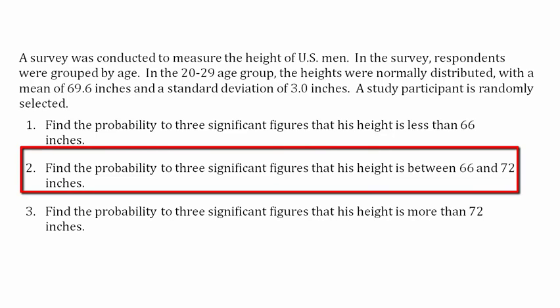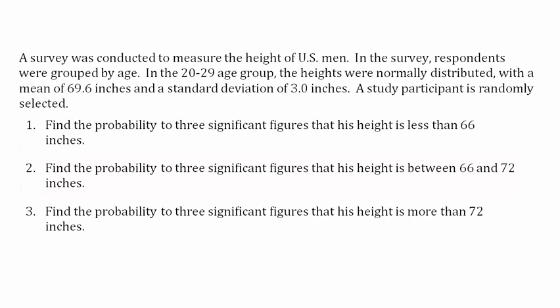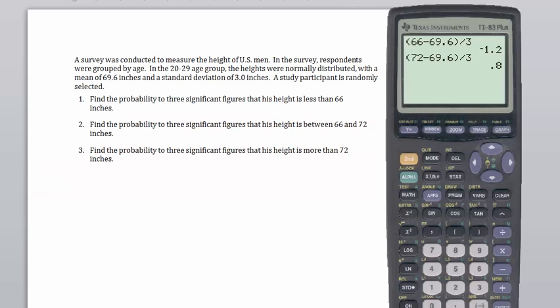In part two of this problem, we're asked to find the probability that the height of a randomly selected participant in this study is between 66 and 72 inches. We will again use three methods to do this problem. The first method will involve the use of the shade normal function.